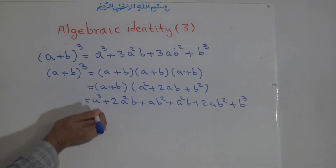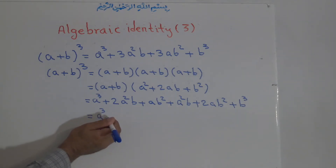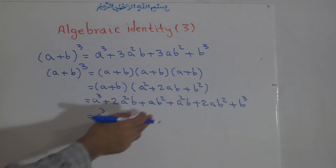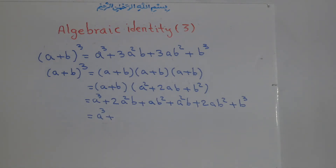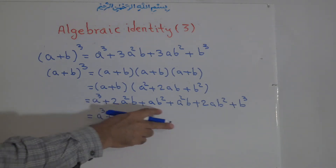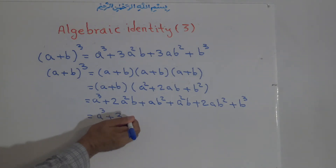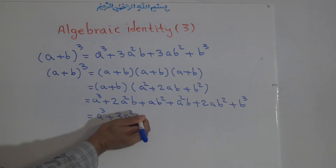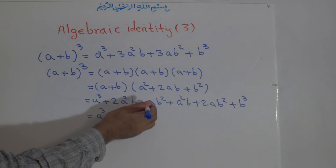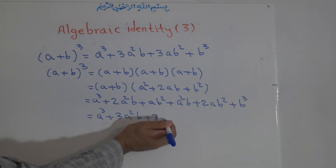We simplify by adding all the like terms. It equals a cubed, plus 2a squared b and a squared b combined give 3a squared b, plus ab squared and 2ab squared combined give 3ab squared.